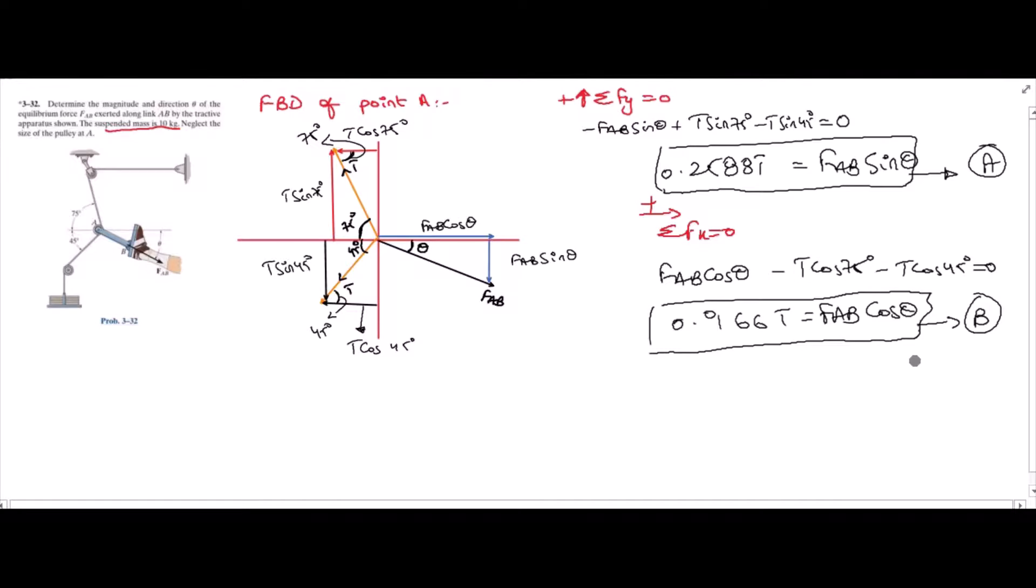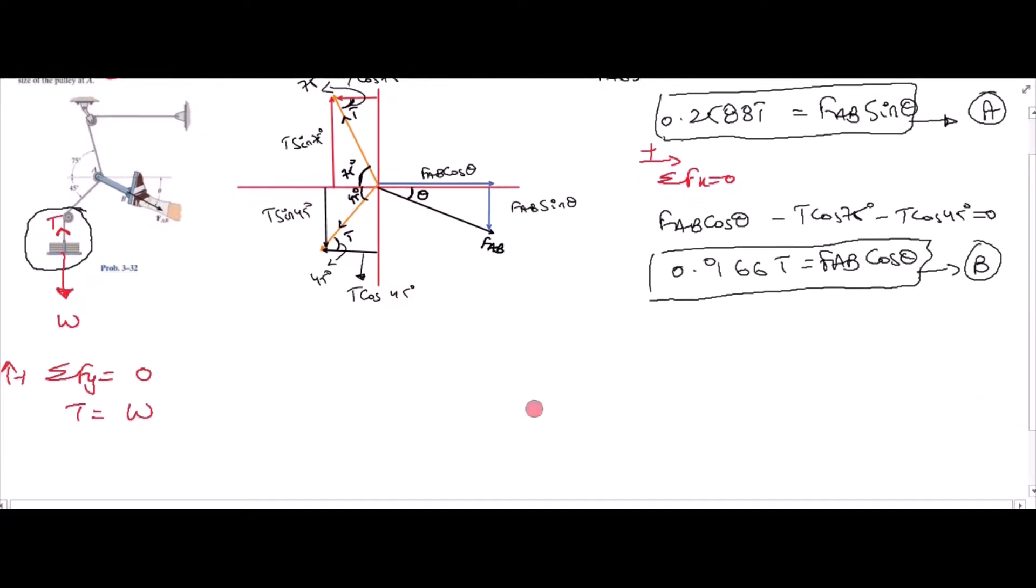Now, you can see that we have two equations but three unknowns. We cannot solve this by these two equations, so we need another equation. Another equation comes from this portion of the diagram. Here, you can see that the weight is acting downwards and the tension is moving upwards. This is the same tension as T because the string is continuous. So if I apply sum of the forces in the y-direction, then T is equal to W, and you can find the value of weight by the mass which we have been given, which is 10 kg into 9.81. Tension equals to 98.1 N.